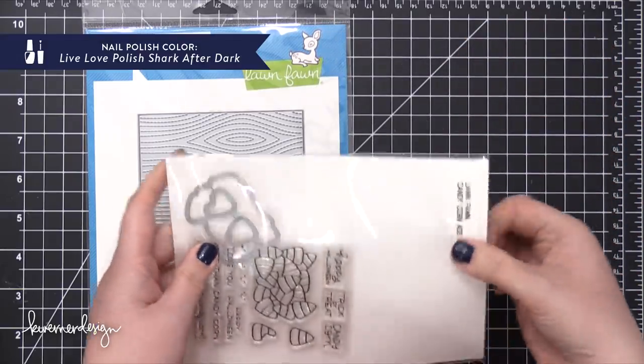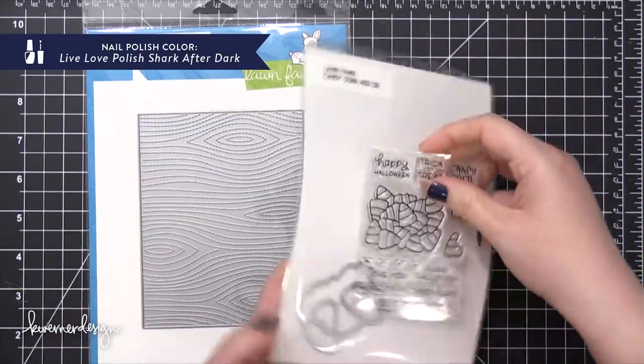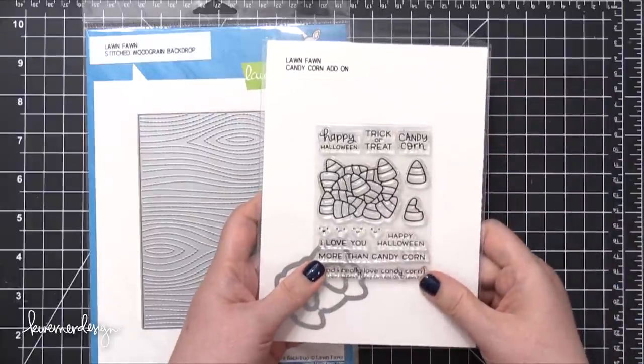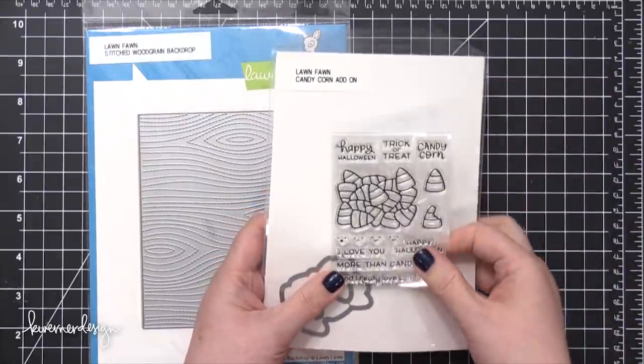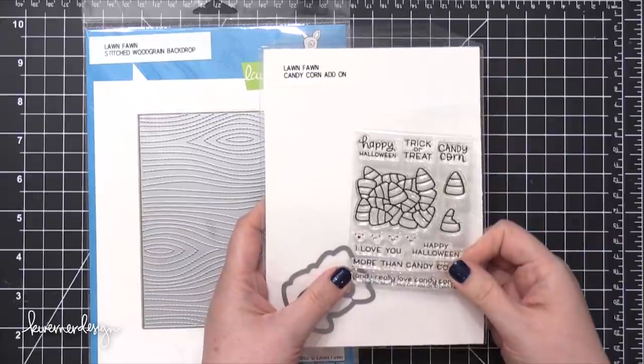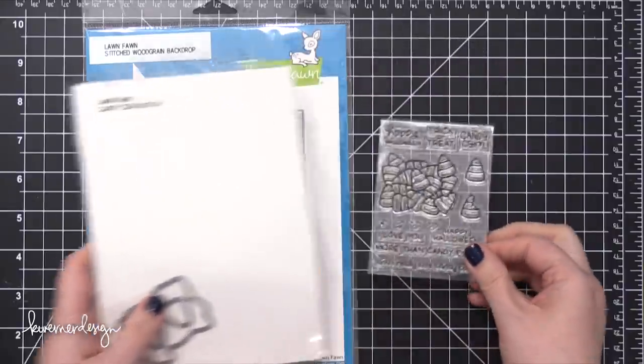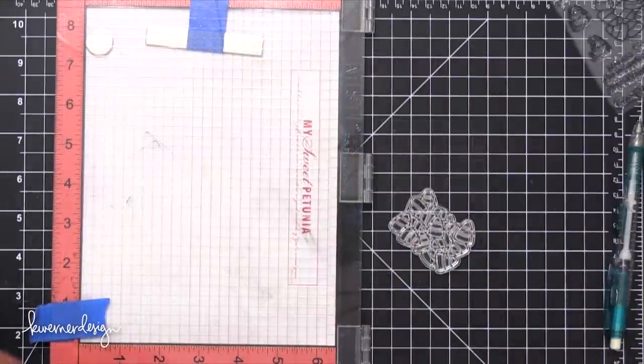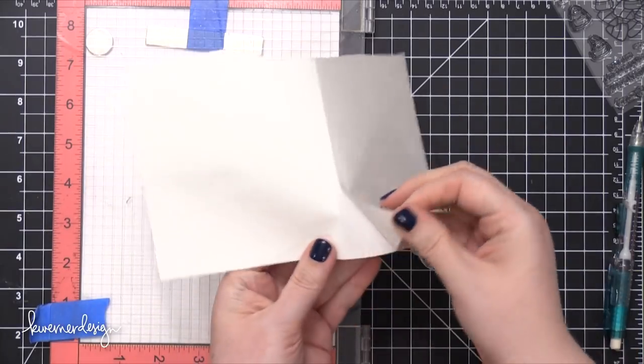Today I'm going to be using a couple different products from Lawn Fawn. This first one is the Candy Corn add-on and it actually goes along with their How You Bean Doing stamp set where it has an empty jar and you can stamp jelly beans in it. Well this is an add-on where you stamp the candy corn inside the jar.